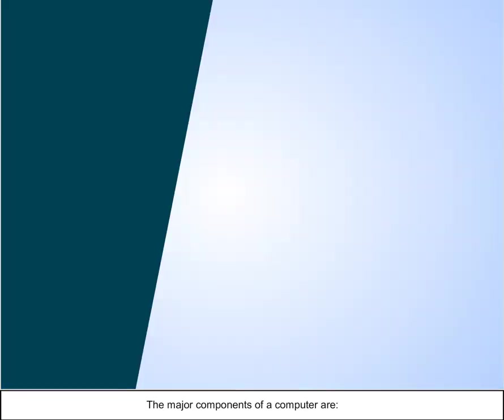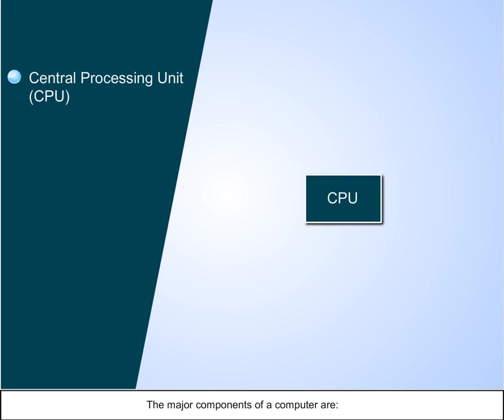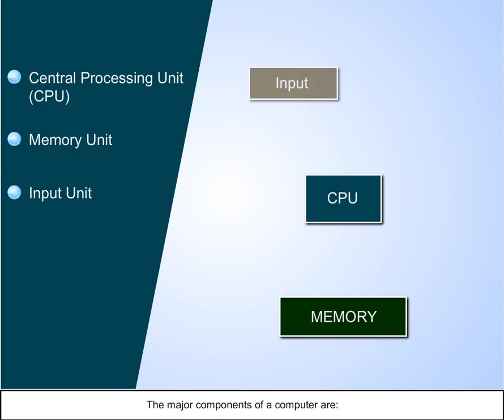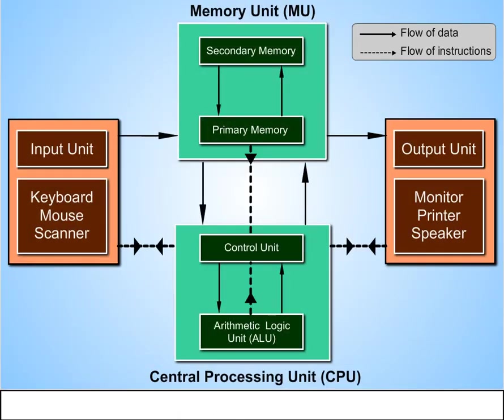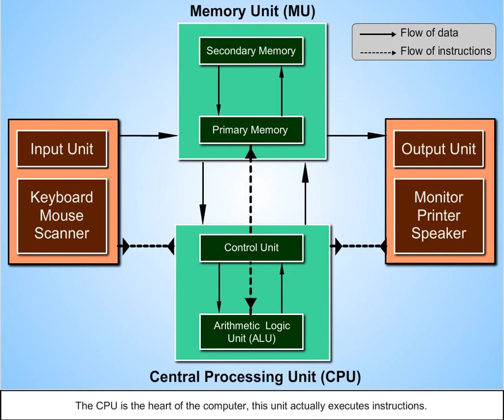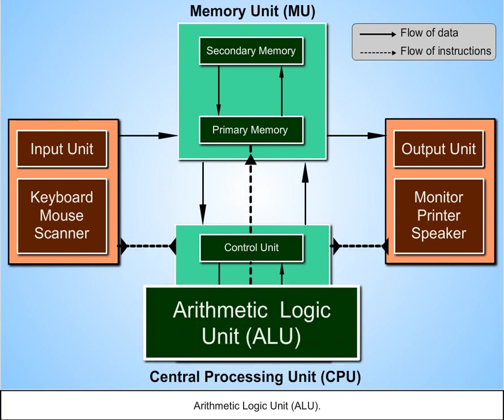The major components of a computer are Central Processing Unit CPU, Memory Unit, Input Unit, and Output Unit. The CPU is the heart of the computer. This unit actually executes instructions. The major sections of CPU are Control Unit CU and Arithmetic Logic Unit ALU.